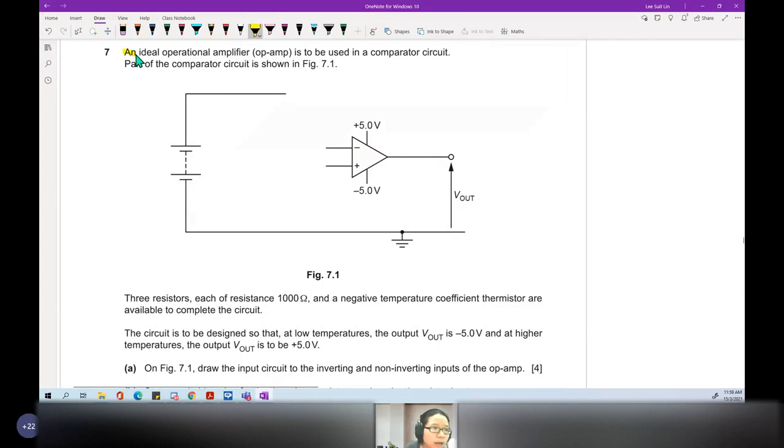So an ideal op-amp is used in a comparator. They tell you what circuit now. We know what to do. Comparator circuit, we definitely need to draw a bunch of potential dividers.